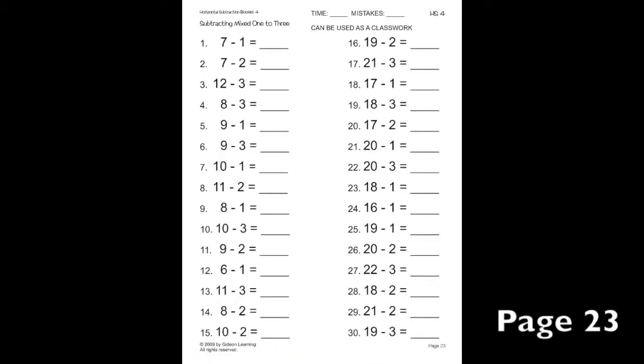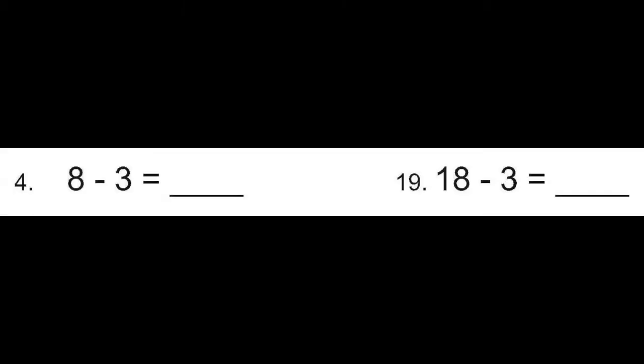Now we'll go on to page 23 and focus on number 4 and 19. Once again we'll look at number 4 first. Here we have 8 minus 3 which equals 5. On number 19 we have 18 minus 3 which is 15. 10 more than 5.